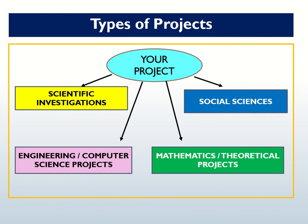Before we introduce the 13 Expo categories, let's have a look at the four types of projects typically found at Expo. Firstly, scientific investigations are usually your experiments where there is a cause and effect. These projects often follow the scientific investigative method. Second, engineering and computer science projects involve designing, building, testing and evaluating systems, solutions and prototypes.